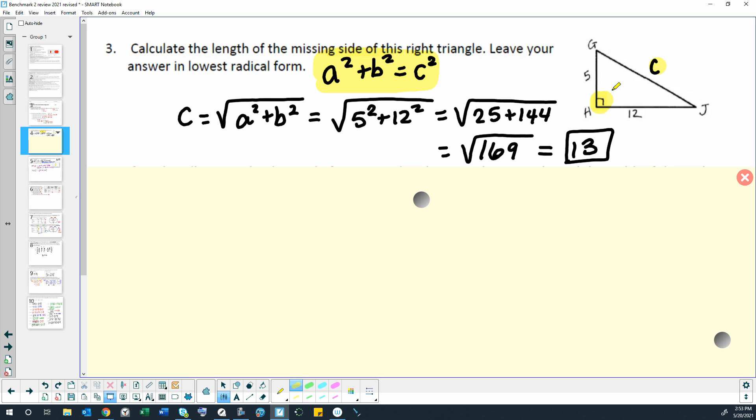If we need to find that hypotenuse, that longest side, we're adding A and B squared. Then to find C, we have to square root, because this formula has C squared. To undo that, we have to square root. So to find C in this particular question, we need to add A squared plus B squared. A and B would be 5 and 12. I'm going to plug in 5 for A and 12 for B. It doesn't matter.